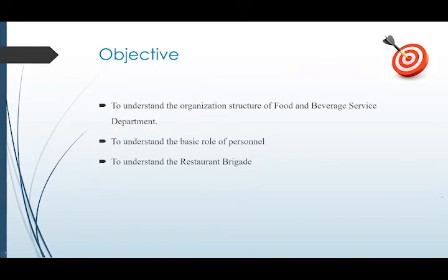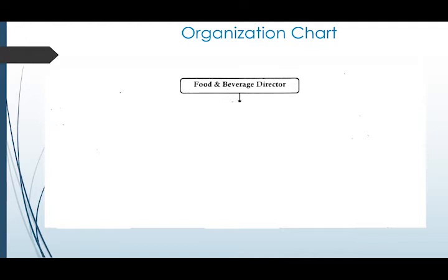Let's begin with our first objective — the Organization Structure for Food and Beverage Service Department. An Organization Structure, or Organization Chart, is the hierarchy of the Food and Beverage Service Department. The hierarchy starts with the Head of the Department, who is the Food and Beverage Service Director — the person overall in-charge of all Food and Beverage Service in a particular restaurant or hotel.